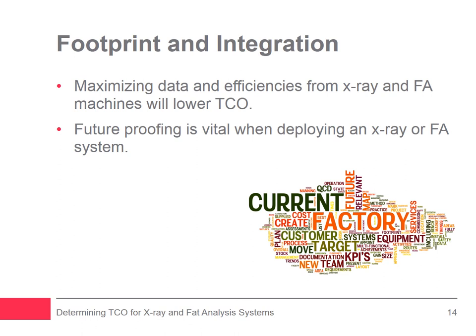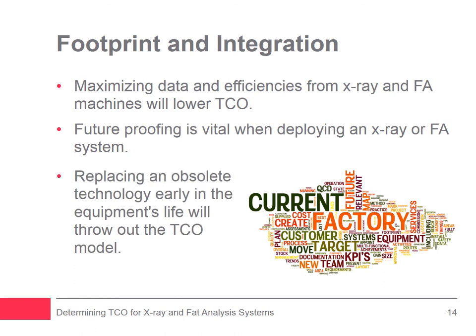Future-proofing is vital when deploying an X-ray or FA system. Careful consideration must be given to the speeds at which the technology can support an operation with accurate data. It's important to ask if today's line speeds will increase over the coming years due to advances in processing equipment. If so, consideration must be given to whether the software has the flexibility to cope with higher production volumes. Having to replace an obsolete technology early in the equipment's life will mean the TCO model would need to be reassessed.